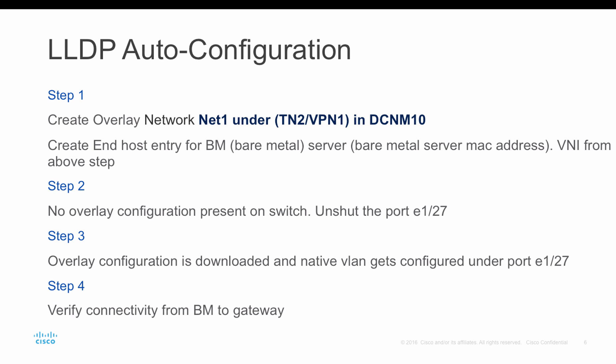Then we will unshut port 127, which connects to the bare metal server, to trigger the LLDP auto configuration. In step 3 we check that the overlay tenant configuration has been applied to that port, and then verify connectivity from the bare metal server to the gateway on the switch.